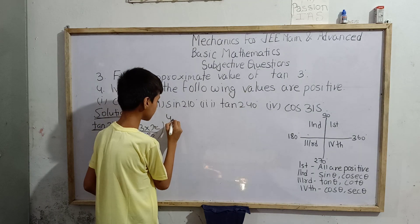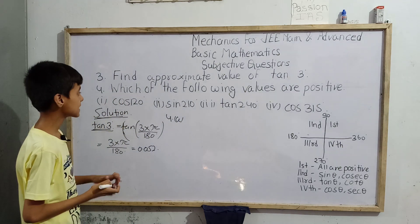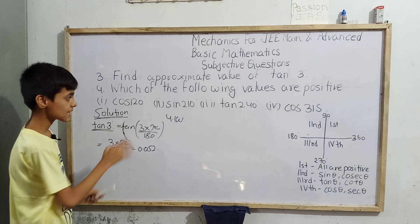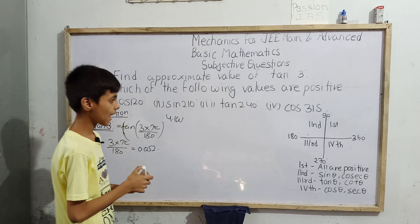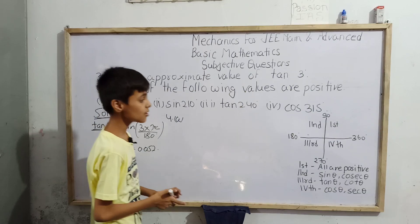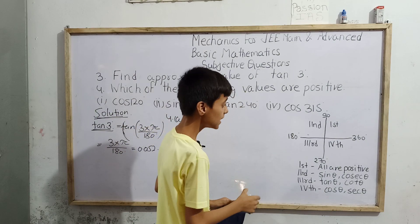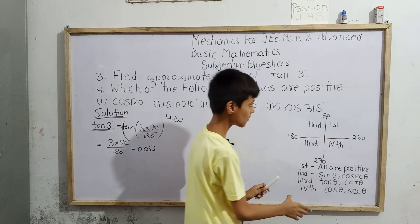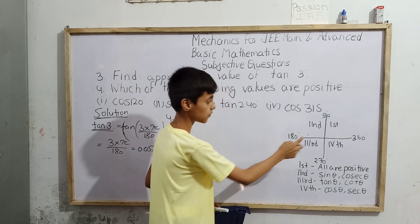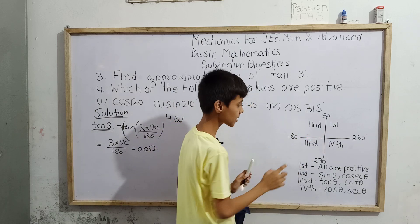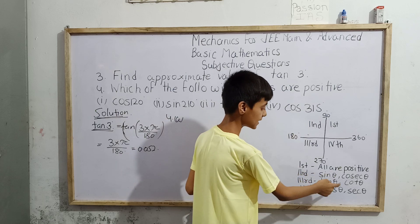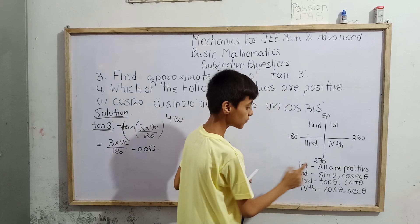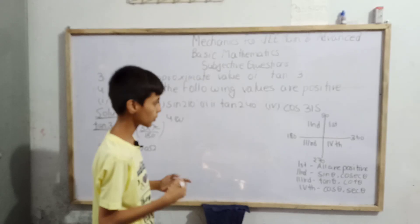Now we'll solve question number four. The question asks which of the following trigonometric ratio values are positive. We have a graph showing the quadrant signs: in the first quadrant all ratios are positive; in the second, only sin and cosec are positive; in the third, only tan and cot are positive; and in the fourth, only cos and sec are positive.